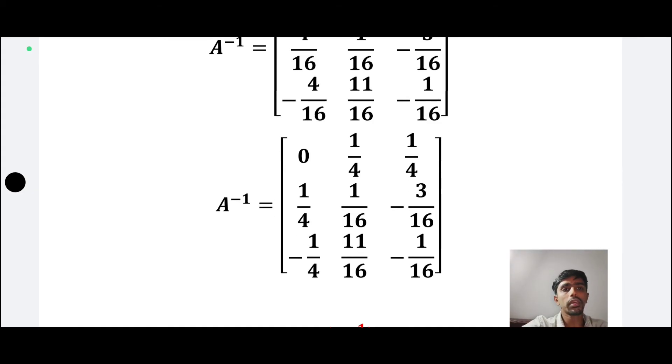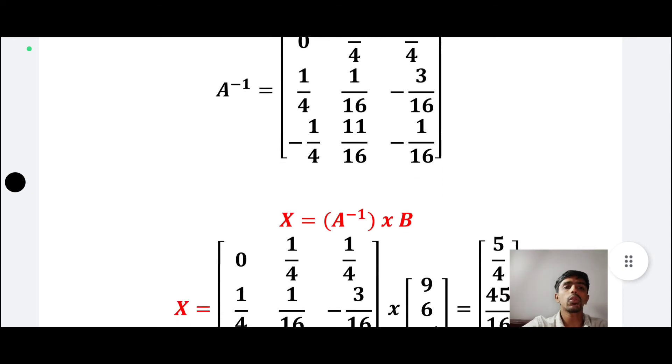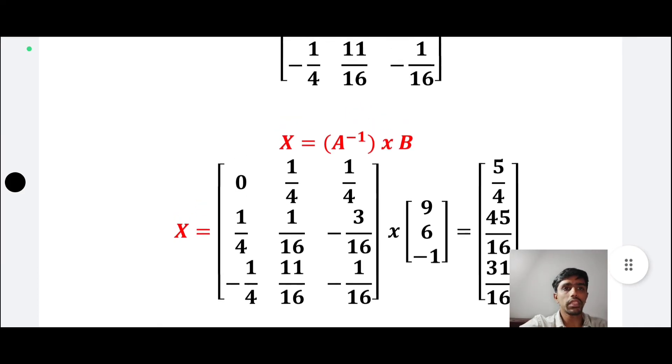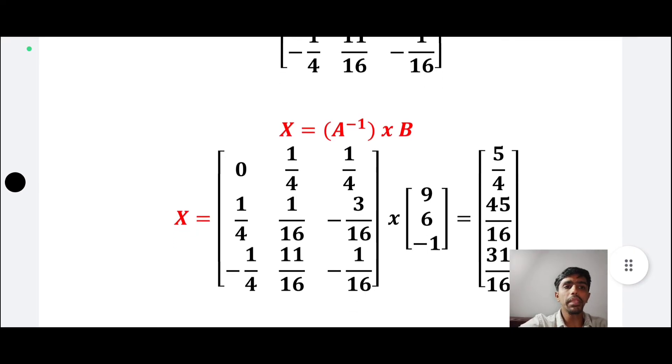1 by 4 is 0.25. X is equal to A inverse into B. A inverse into B, where B is 9, 6, minus 1. This is the multiplication. 1 by 4 is 0.25, 1 by 4 is 0.25.